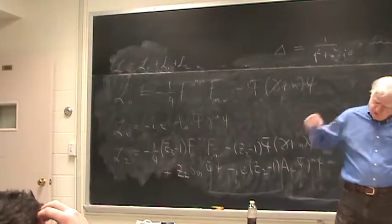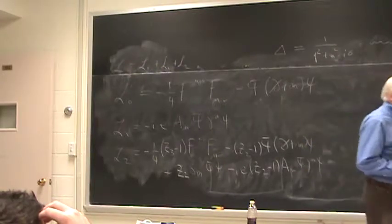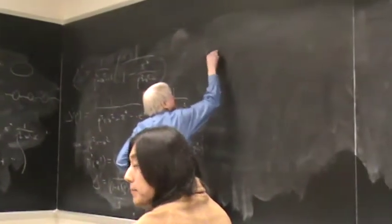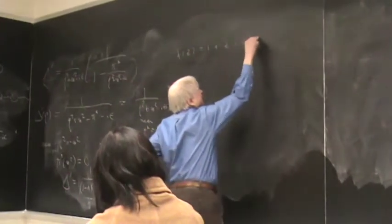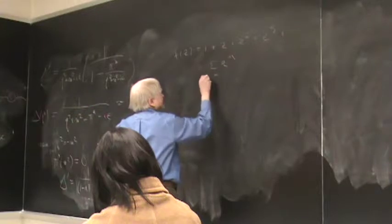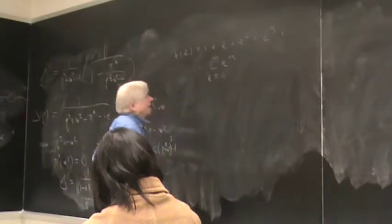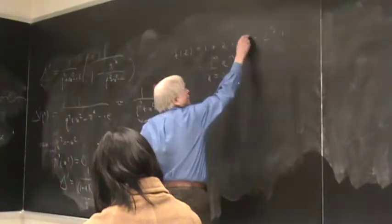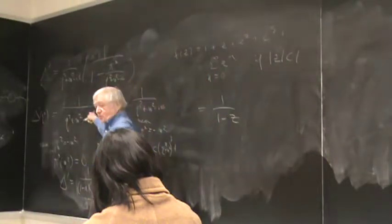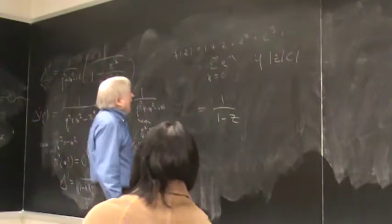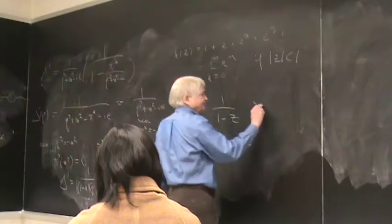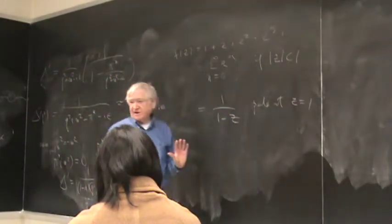Now let's get back to dimensional regularization. The basic idea, as Jason emphasized, is analytic continuation. Consider the series 1 plus z plus z squared plus z cubed, which is the sum of z^n from n equals 0 to infinity. If the absolute value of z is less than 1, we can sum it to 1 over (1 minus z). We can reinterpret this power series as an analytic function that has a pole at z equals 1 but is otherwise finite and well-defined.